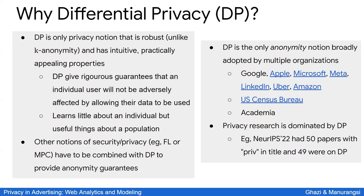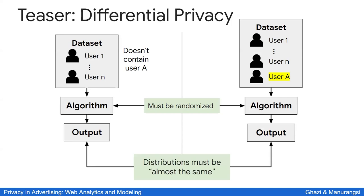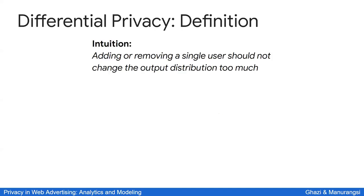As discussed, we compare two settings: one where a user is in the dataset versus not. In differential privacy, we require the algorithm to be randomized, and we require that running it on these two settings produces output distributions that are similar — meaning roughly the same. The intuition is: if you add or remove a single user from the dataset, the output distribution of the algorithm should remain roughly the same.